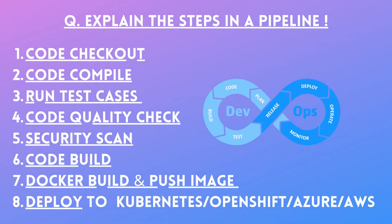Usually the first question I faced in most interviews was: what are the steps in a pipeline? The pipeline may be in Azure DevOps, AWS DevOps, or Jenkins, but the steps will be common in all. There are eight stages. The first one is code checkout — basically you are using a Git repository or any other repository and creating a local copy of the source code in your system.